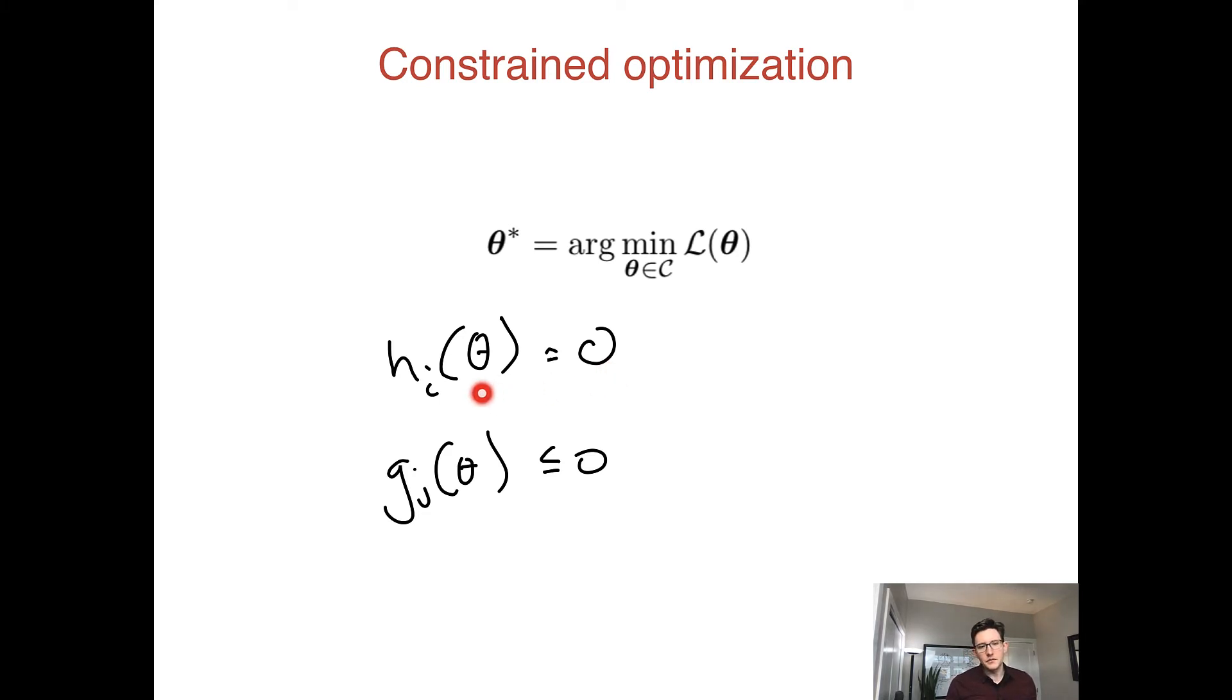Because we can always add some constant c to both sides, and that would give us the constraint that's only satisfied when h equals some other constant. The same thing goes for inequality constraints. Generally, we're going to write our constraints as h_i(θ) equals zero and g_j(θ) less than or equal to zero.